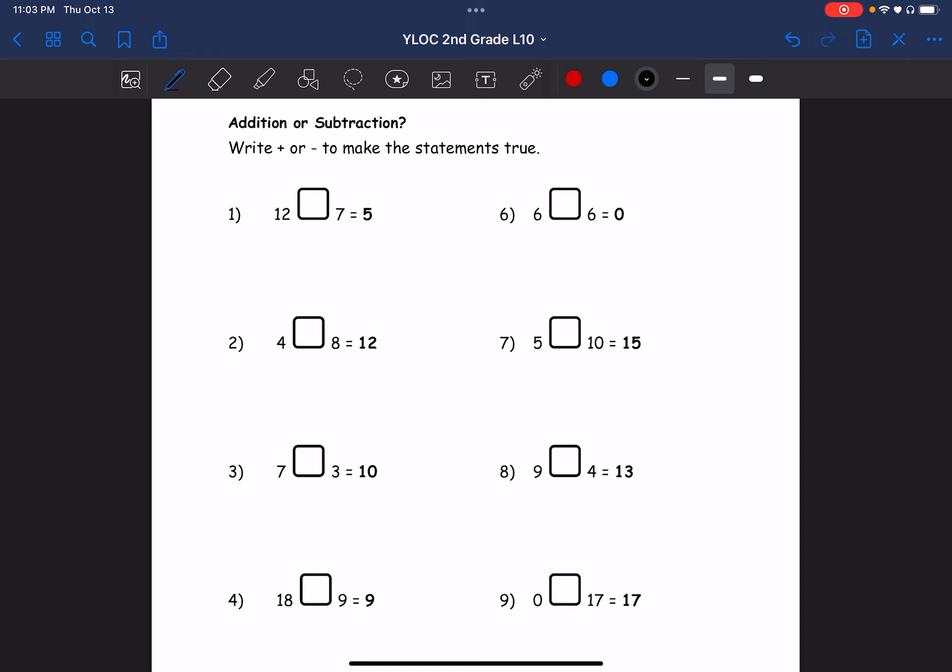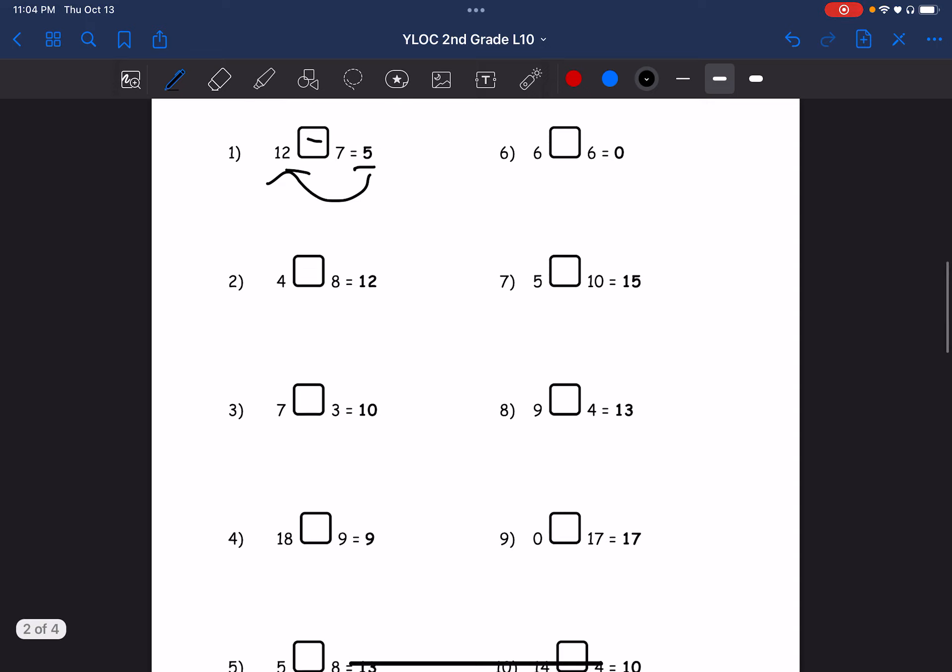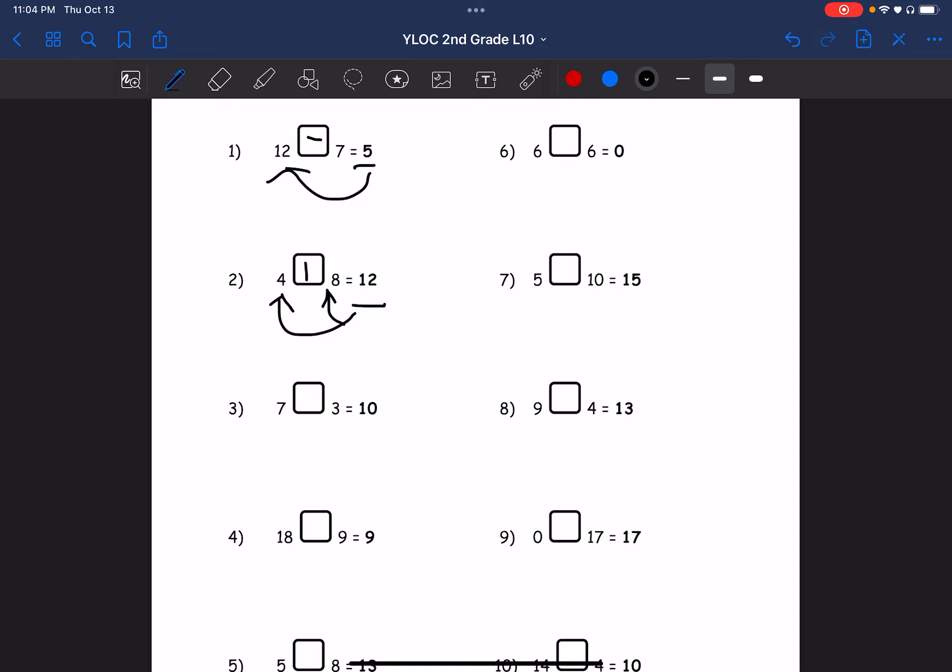Addition or subtraction - write plus or minus to make the statements true. Alright, so if we look at the first one we see 12, 7, and 5. Since the answer is smaller than the first number, we know it must be minus. Okay, we see 4 and 8, the answer is greater than both of these numbers so it must be plus.